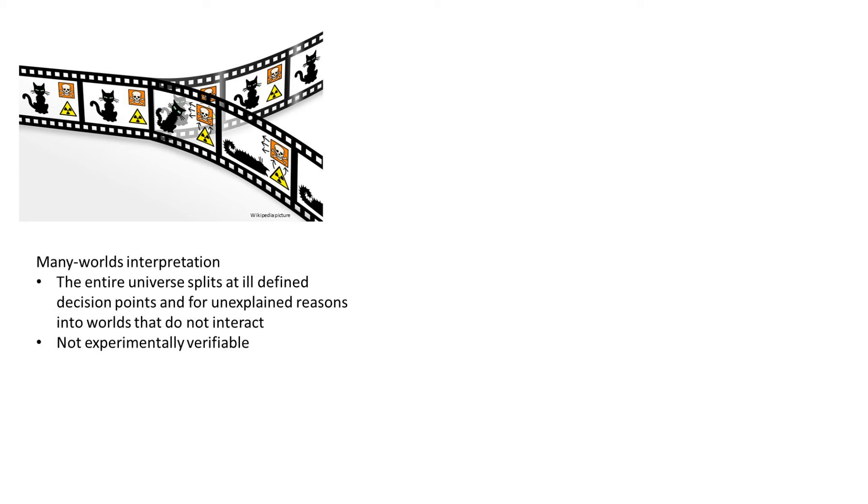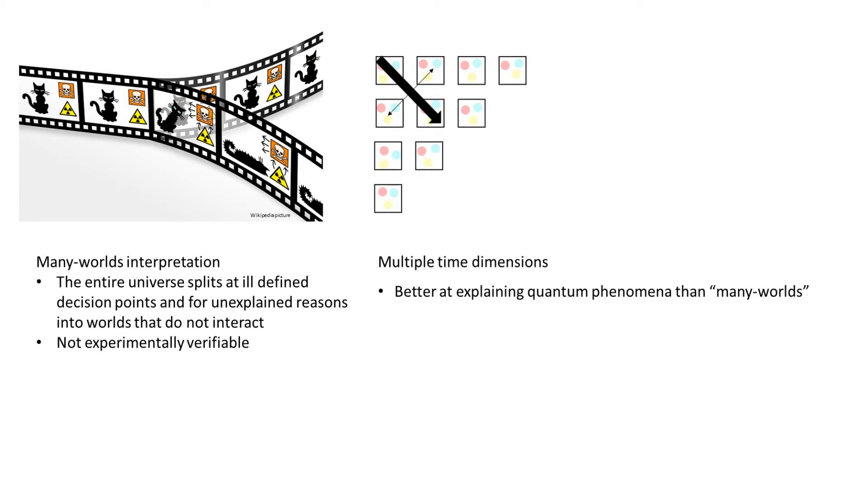You might also think that this sounds a bit like the many worlds interpretation of quantum theory, which postulates that the entire universe splits at quantum events. The ideas are certainly related, and multiple time dimensions can explain at least as much as many worlds. But it's also more economical and doesn't double the size of a universe state-space each quantum event. Neighboring timelines do interact with each other. And crucially, what we have described are consequences of multiple time dimensions, and don't require the postulation of arbitrary laws. And because of these differences, we will be able to verify this idea experimentally.